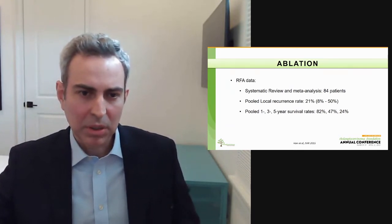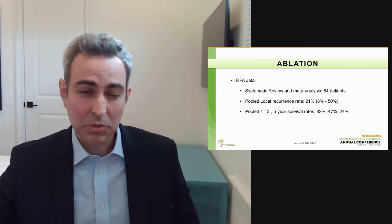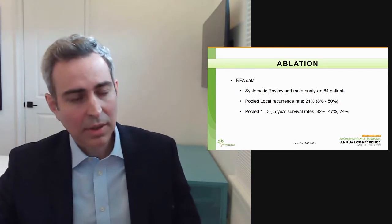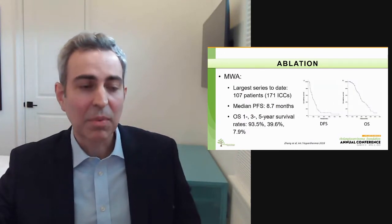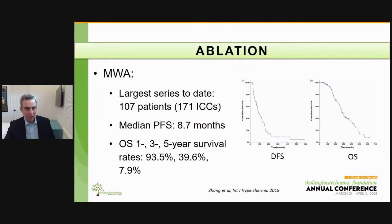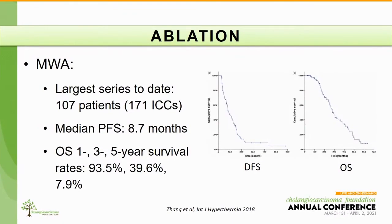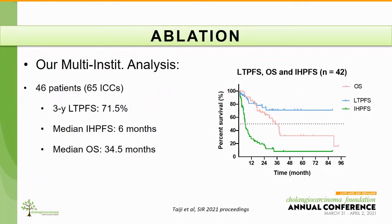The goal is to perform ablations achieving local tumor progression rates of a maximum of 10 to 15 percent. Pooled one-, three-, and five-year survival rates in this meta-analysis were 82, 47, and 24 percent respectively. In terms of microwave ablation — our thermal modality of choice, used in over 95 percent of our patients here at MD Anderson — the largest series to date is from Zang: 107 patients with 171 cholangiocarcinomas treated, with a median progression-free survival of 8.7 months. Most of those patients progressed with new tumors within the liver, not at the ablated sites.